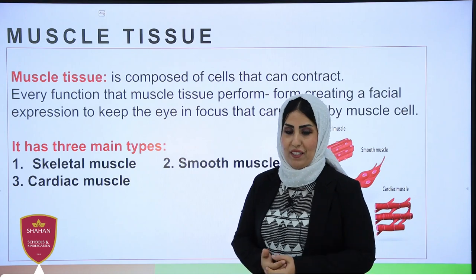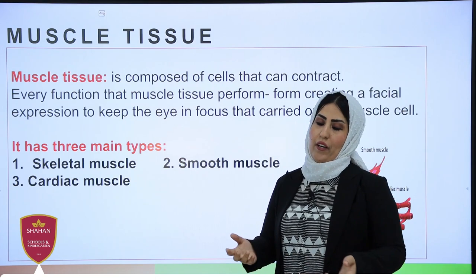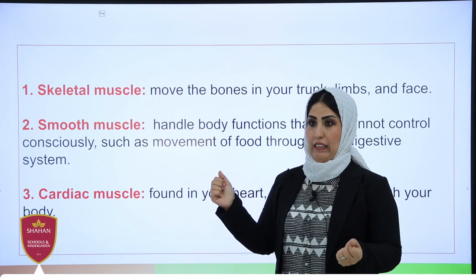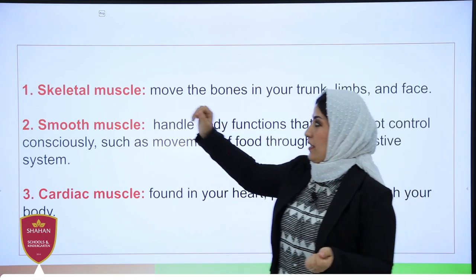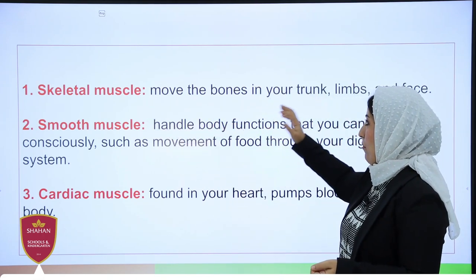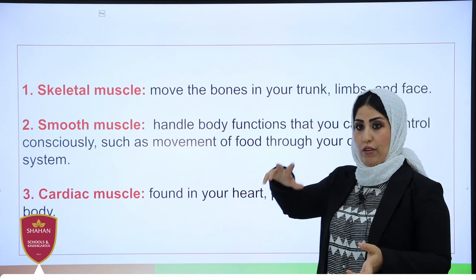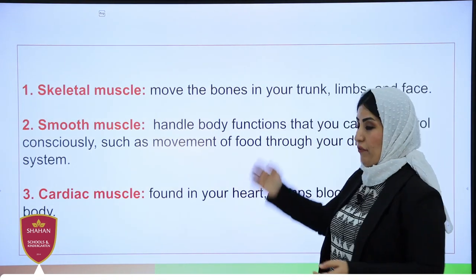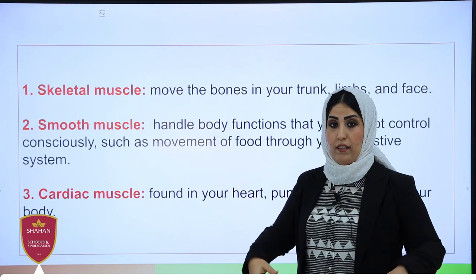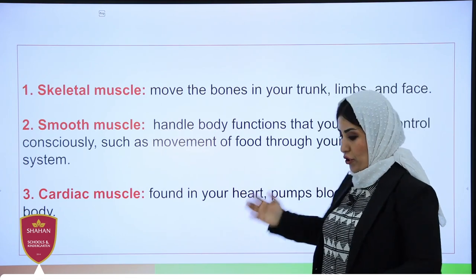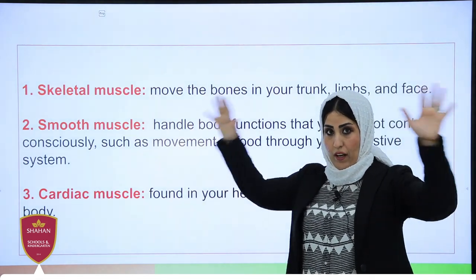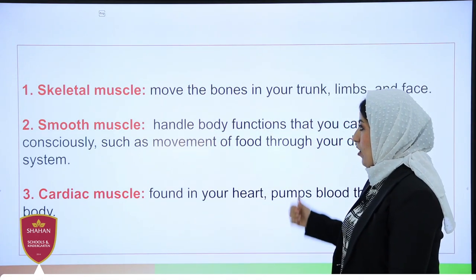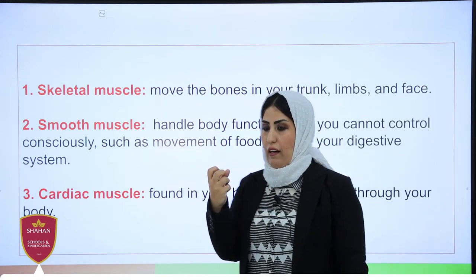The first type of muscle tissue is skeletal muscle, which helps move the bones in your trunk, limbs, and face. Basically, the trunk divides into the upper trunk, middle, and lower trunk. Limbs include our upper limbs and lower limbs, and skeletal muscles also help move the face.